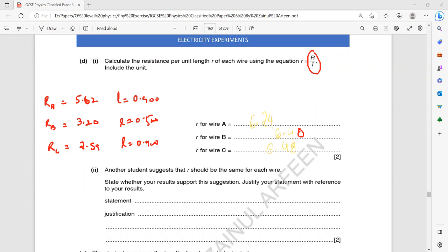And the unit is also important, as you have to complete the unit, including a unit. The unit of the resistance is ohm and the length was given in meter. So what is the unit here? So we'll write ohm per meter, or you can write ohm meter minus one.